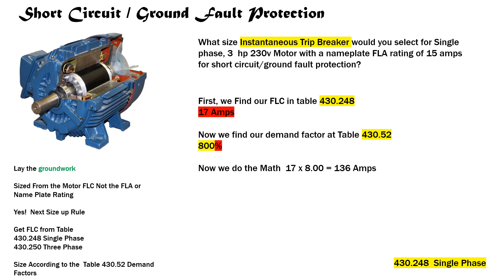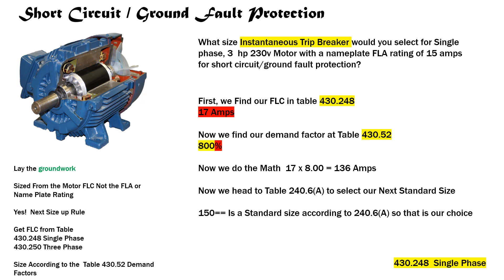We take 17 multiplied by 8, which gives us 136 amps. We head to table 240.6(A) and our next standard selection is a 150 amp overcurrent device. What's amazing about this is that if you were to size the wire — taking 17 × 1.25 — depending on terminals and factors, let's say you selected 10 gauge wire. You could legally put that 10 gauge wire on a 150 amp breaker for short circuit ground fault protection. It wouldn't even fit in the lug — you'd likely have to use some type of Polaris or Nimbus connector or another lug type.